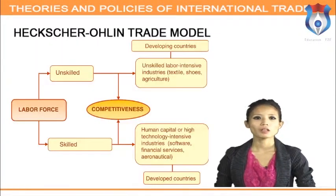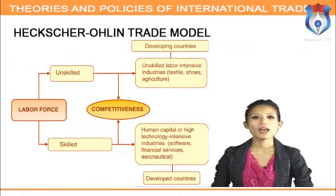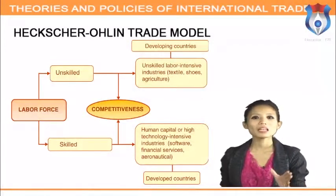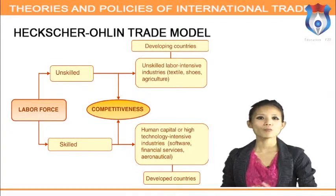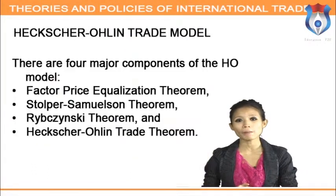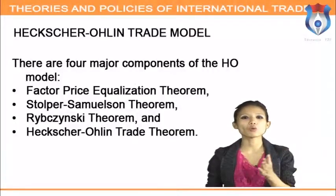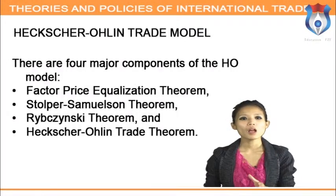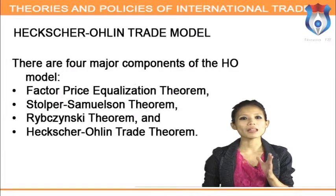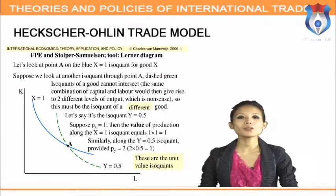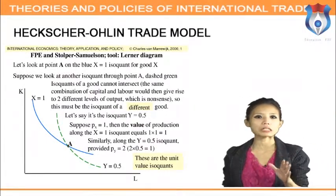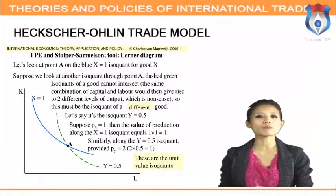The Heckscher-Ohlin (H-O) model was first conceived by Swedish economists Eli Heckscher and Bertil Ohlin; rudimentary concepts were further developed by Paul Samuelson and Ronald Jones, among others. There are four major components of the H-O model: the Factor Price Equalization theorem, the Stolper-Samuelson theorem, the Rybczynski theorem, and the Heckscher-Ohlin trade theorem. The Factor Price Equalization theorem is the most fragile of the four — if any of the eight assumptions is violated, it will not hold.